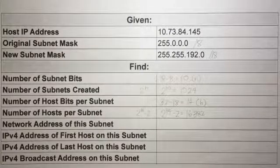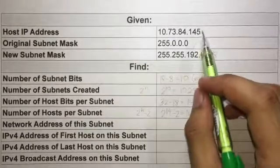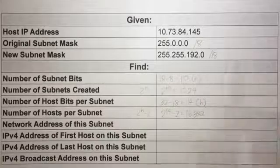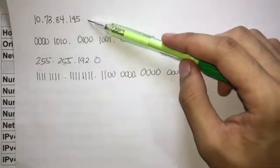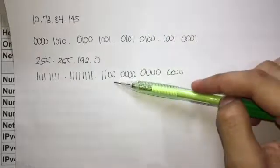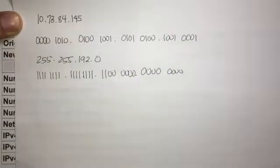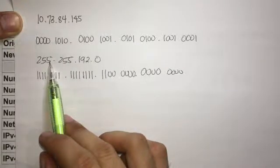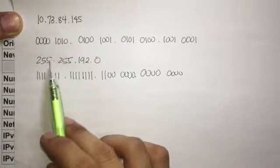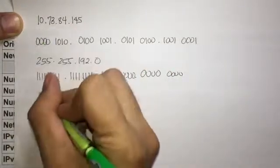To get the network address of the subnet, we convert the IP address into its binary form and also convert the new subnet mask into its binary form. This is the binary form of the IP address, and this is the binary form of the new subnet mask. We will be copying the portions of the IP address which correspond to 255 in the subnet mask.